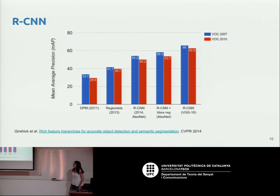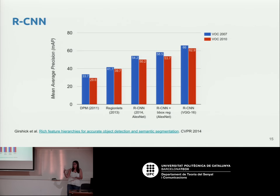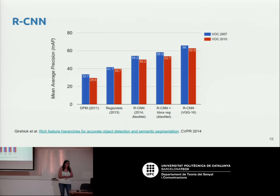Here you can see a graph showing the mean average precision metric used for this kind of problem. It shows the improvement achieved thanks to convolutional neural networks: the first two approaches were without CNNs, and then Region CNN was when CNNs were applied. There was a considerable increase in performance, and since then CNNs have been the state of the art for this task.